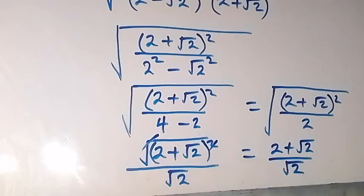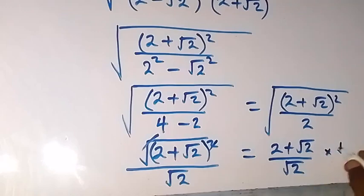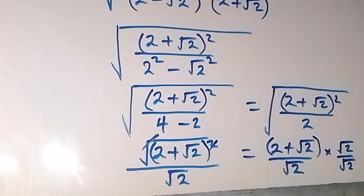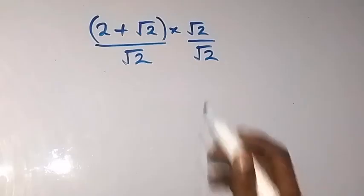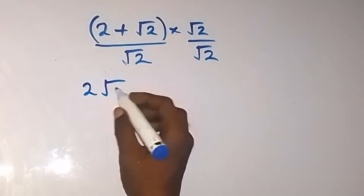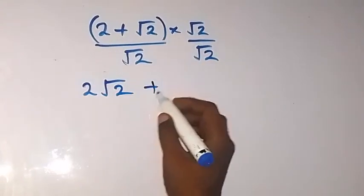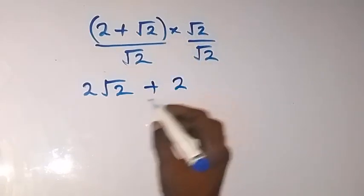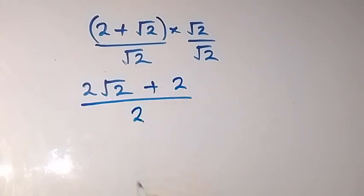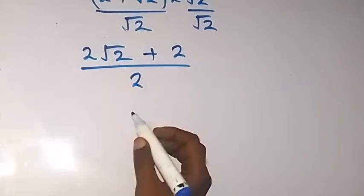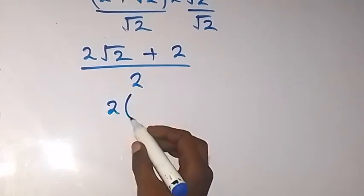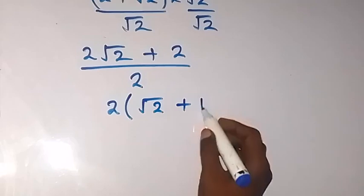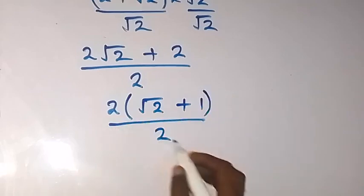We can't leave the answer like that, so we rationalize further. We multiply by root 2 over root 2. Root 2 opens the bracket: root 2 times 2 is 2 root 2, plus root 2 times root 2 is 2, over root 2 times root 2 which is 2. The 2 is common so we factor it out: 2 times (root 2 plus 1), over 2.